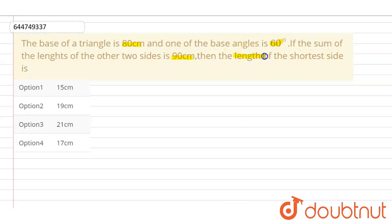In this question we need to find the length of the shortest side of the triangle. The base of the triangle is 80 cm, this is given, and one of the base angles is 60°, this is given.